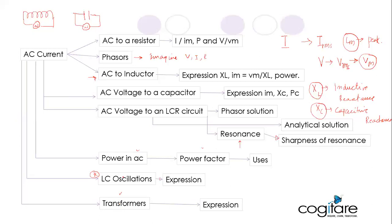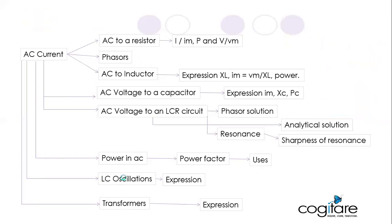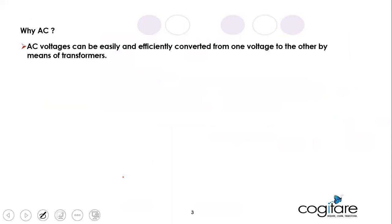AC voltages can be easily and efficiently converted from one voltage level to another by means of transformers. Using step-up and step-down transformers, we can convert voltages as needed. That is one of the main advantages of using AC voltage.